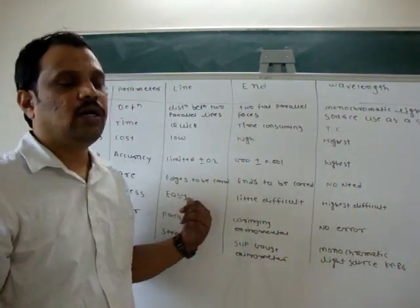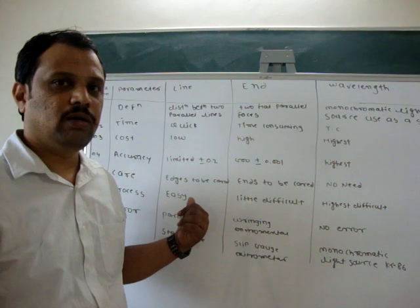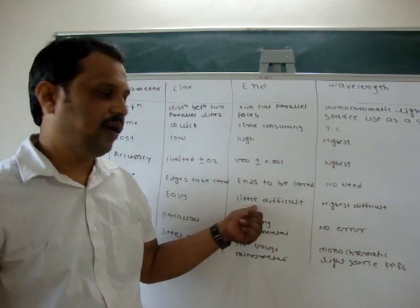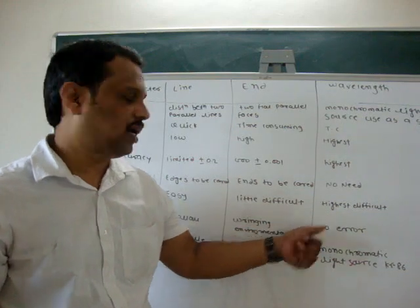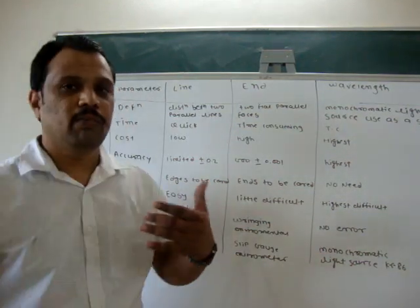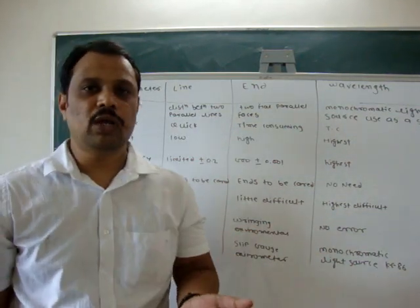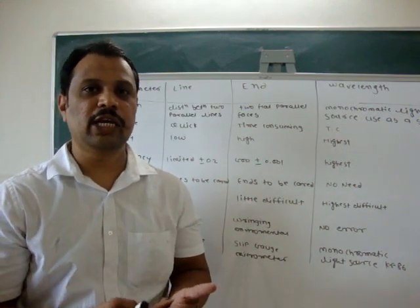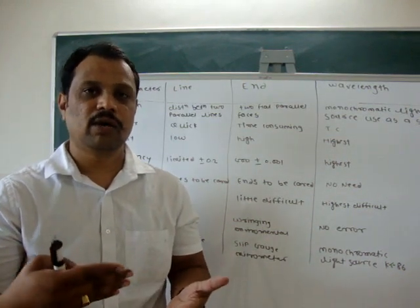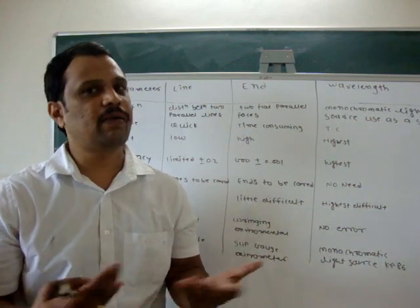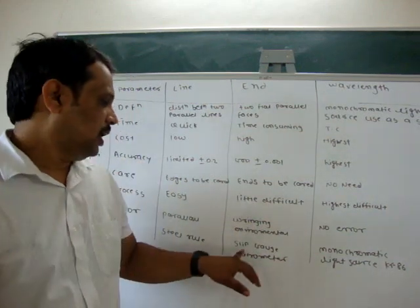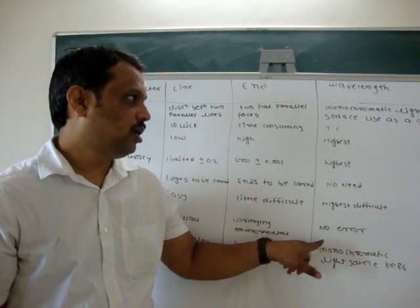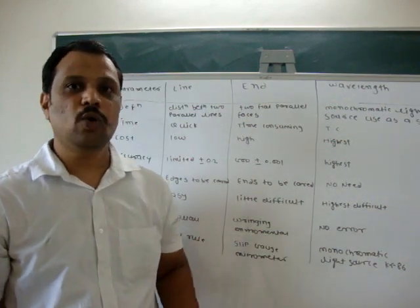Next is process. The process of measuring by using a steel rule is easy. In vernier it is difficult, and in wavelength standard it is the most difficult. Error: by using a steel rule in line standard, there is a parallax error — if you measure distance from a side angle, there might be a parallax error. In end standard there is a wringing error and environmental error. In wavelength standard, there is no error.